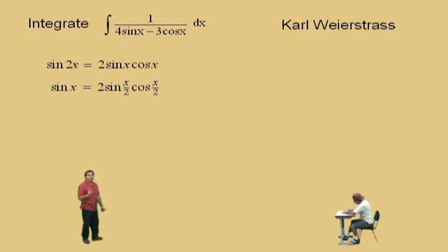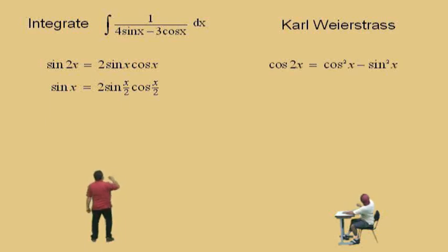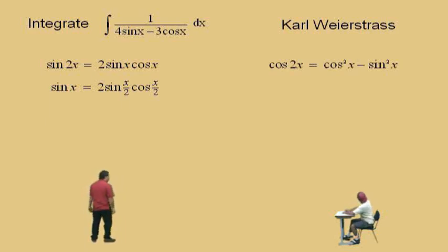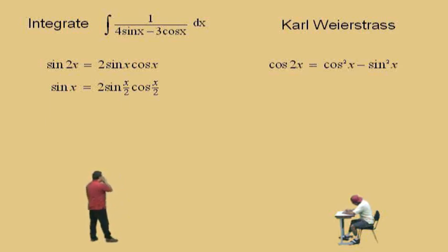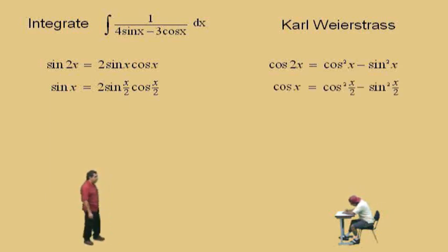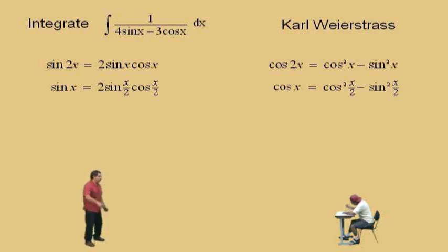Now let's use the double angle formula for cosine. Cosine of 2x equals cosine squared x minus sine squared x. Using the same substitution, cosine x equals cosine squared of x/2 minus sine squared of x/2.